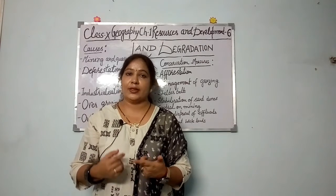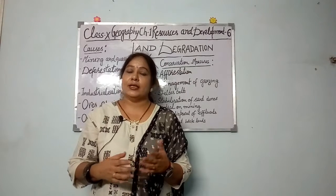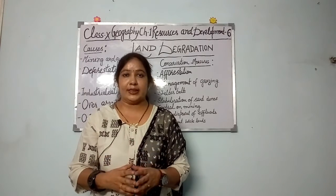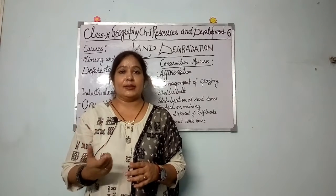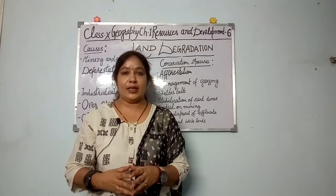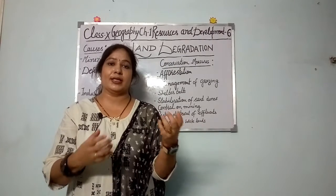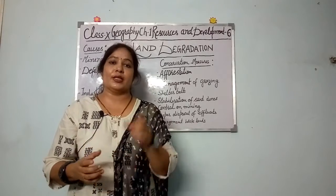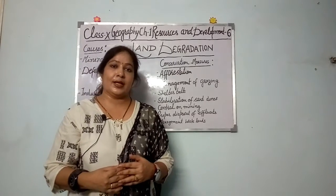Mining and quarrying, over-grazing, over-irrigation, industrialization — in pasture lands jaisse Rajasthan, Madhya Pradesh, Gujarat — in ilaqon mein over-grazing is one of the important factors of land degradation. Toh one mark mein dhek ke aap se pooch sakti hai ki Rajasthan mein what is the main factor of land degradation, aur aap se aise bhi pooch sakti hai ki over-grazing kaahan kaahan par land ko degrade kar rahi hai — toh aapko states ke naam mention karne hain.